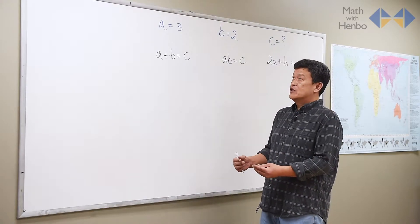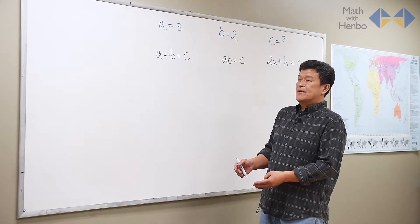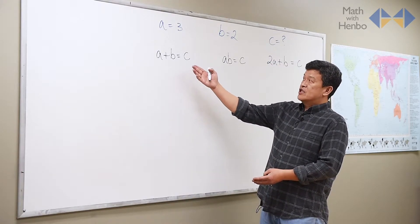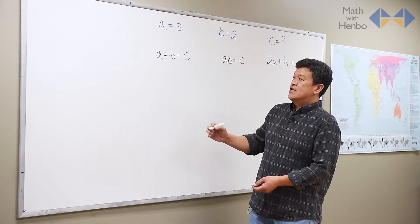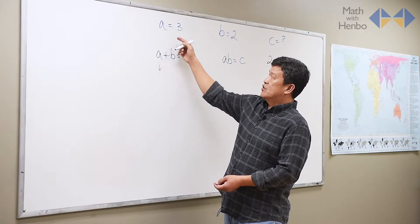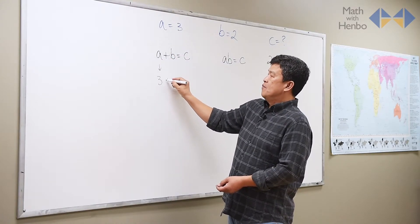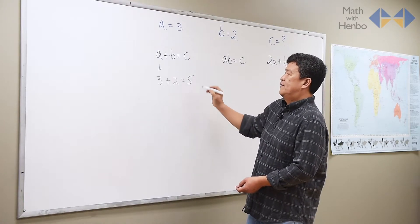That means two values are given and we have to find a third. So in this case, for example, if a is 3, b is 2, we have to find c. In this case, all we have to do is stick the numbers in. a was 3, or is 3, b is 2, therefore c is 5.